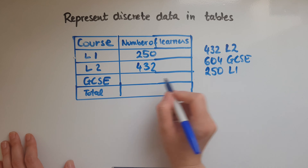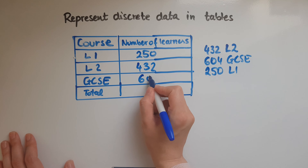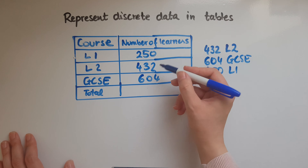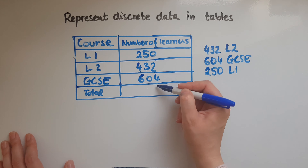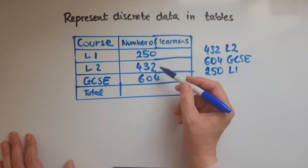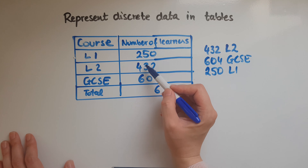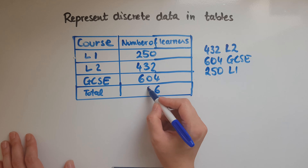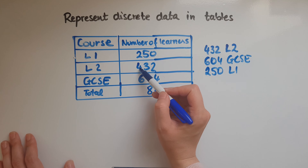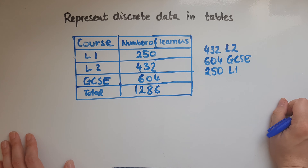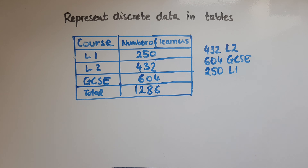GCSE has 604 learners. Now we work out the total. I've lined the numbers up so it's easy: 2 and 4 is 6, 5 and 3 is 8, 2 and 4 is 6, and 6 is 12 — so 1,286 learners in total doing these three courses.